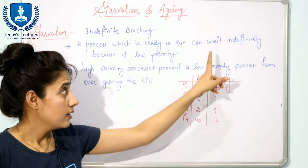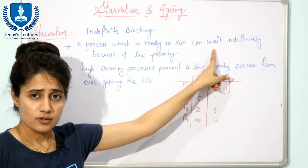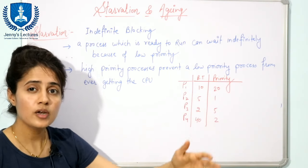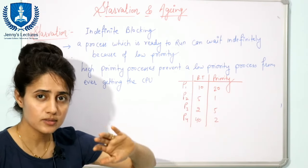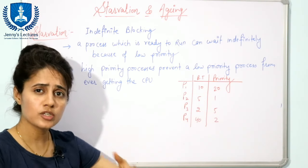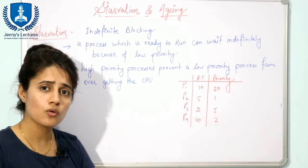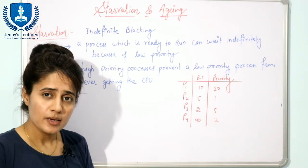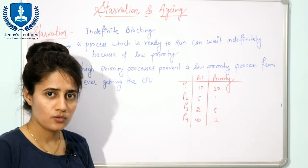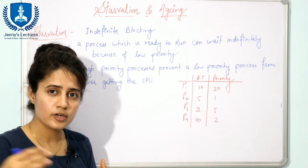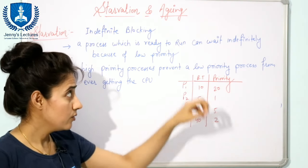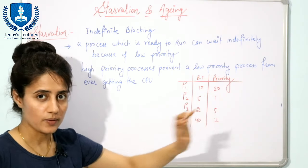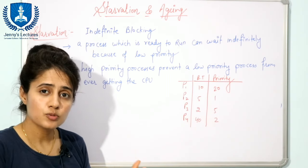A process which is ready to run will not wait indefinitely — that is not always true. A process which is having a low priority can wait sometimes, but sometimes the CPU will be allocated to that process. So here you will write 'it can wait,' you will not write 'it will wait.'